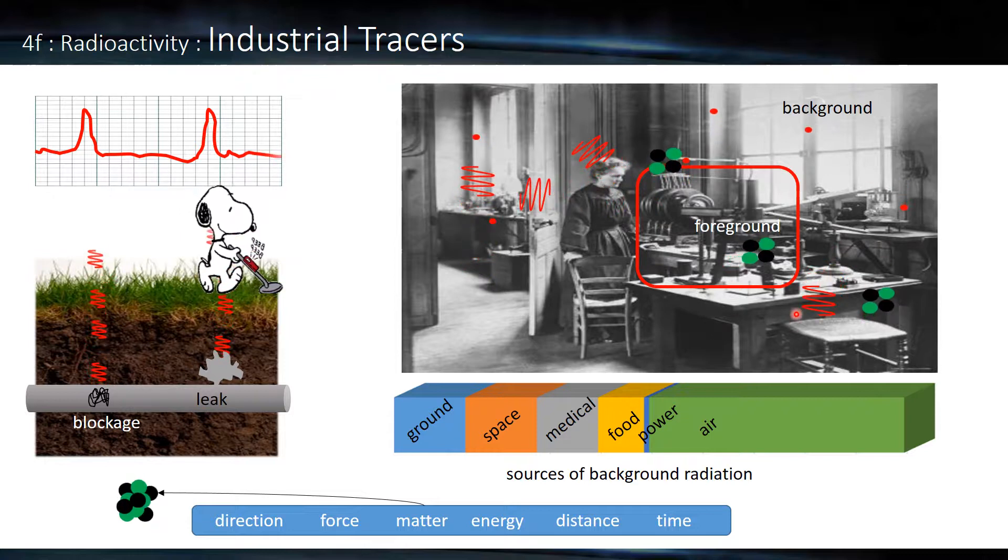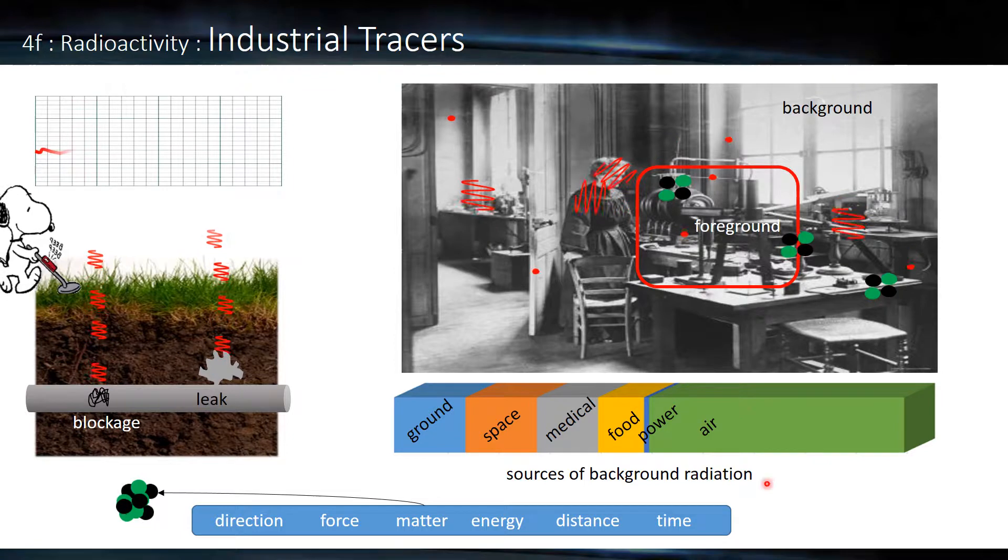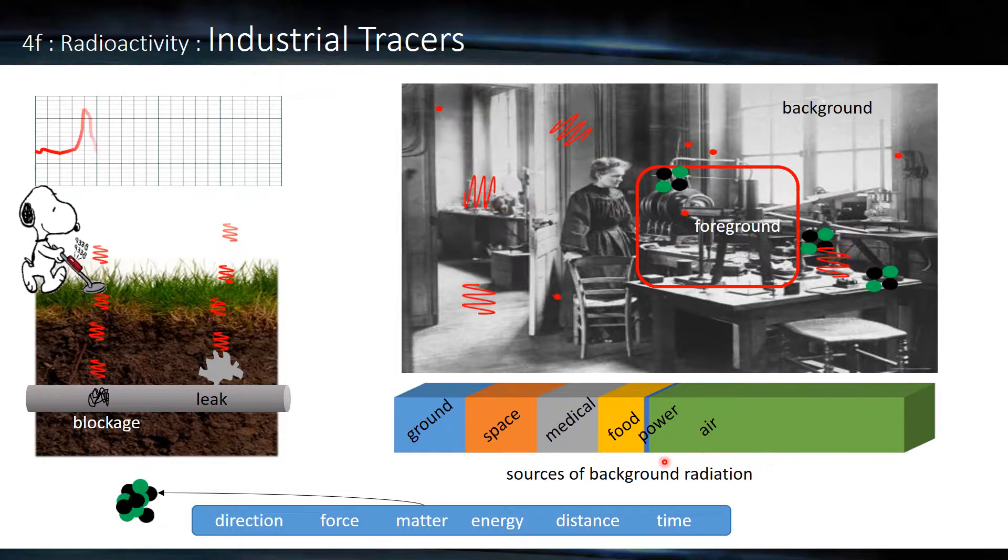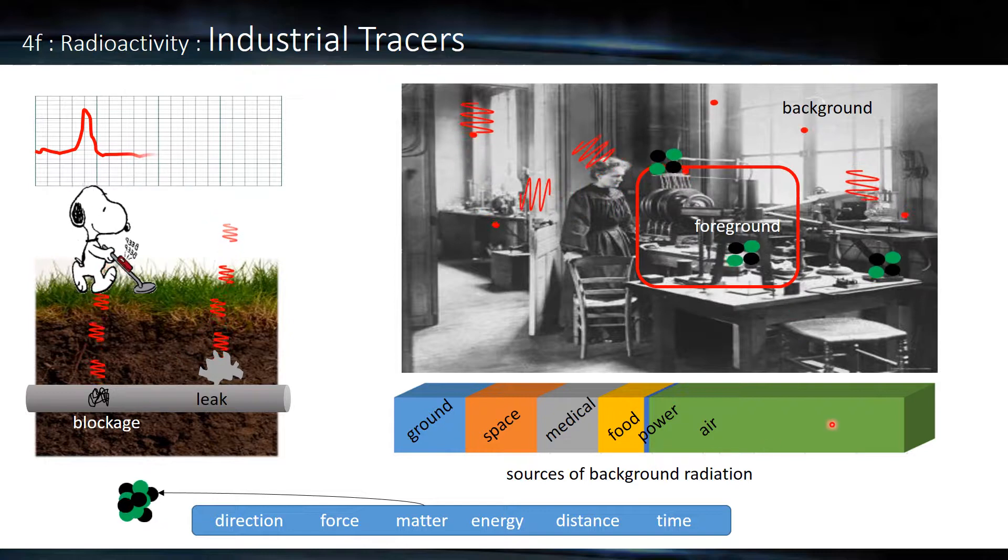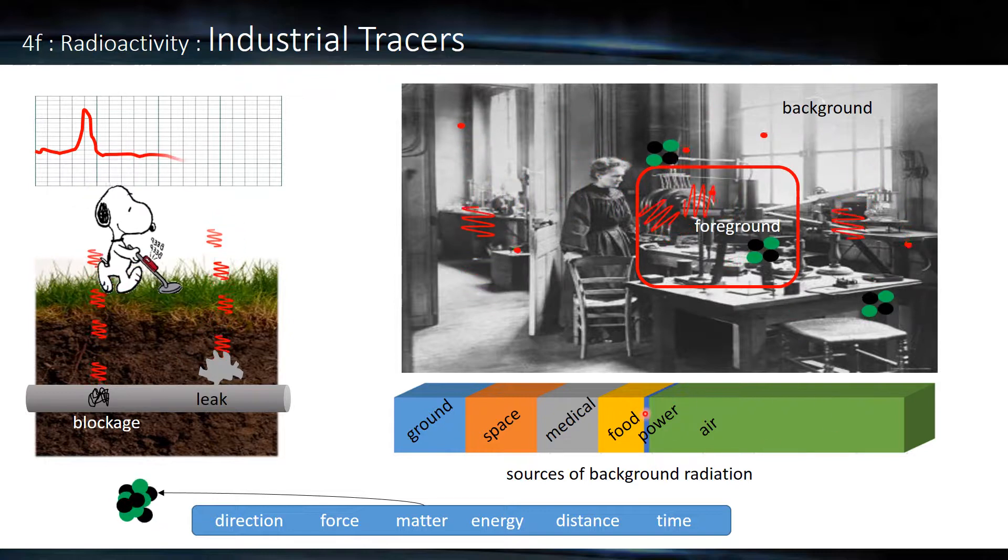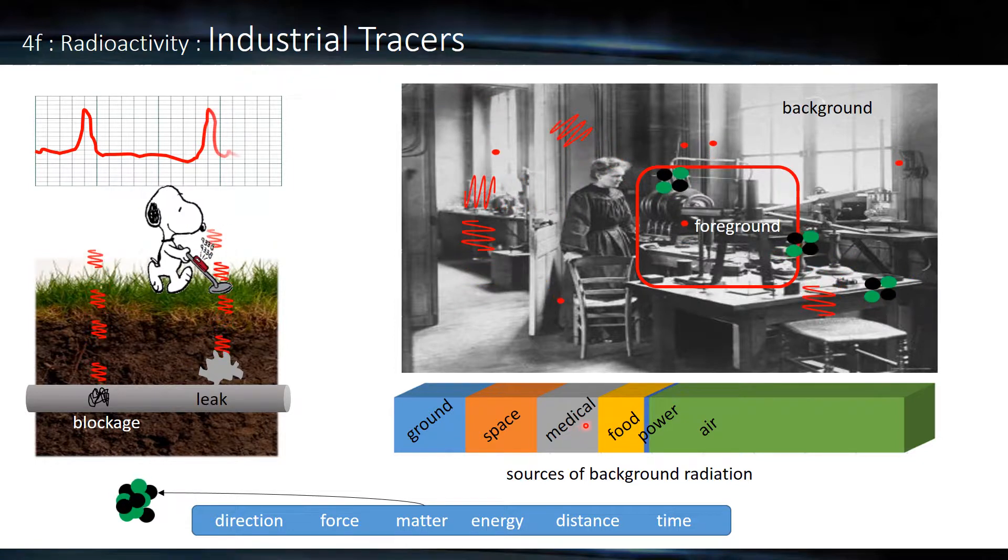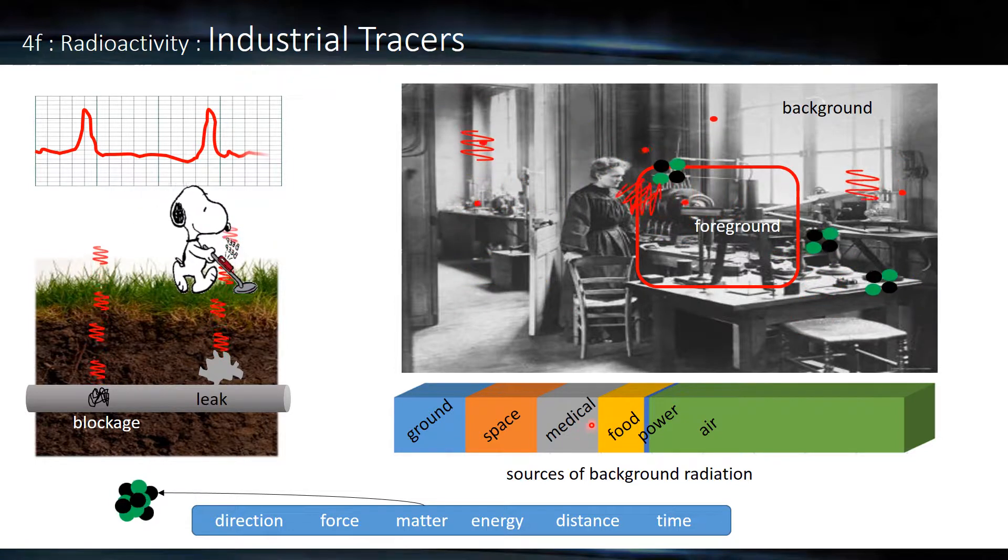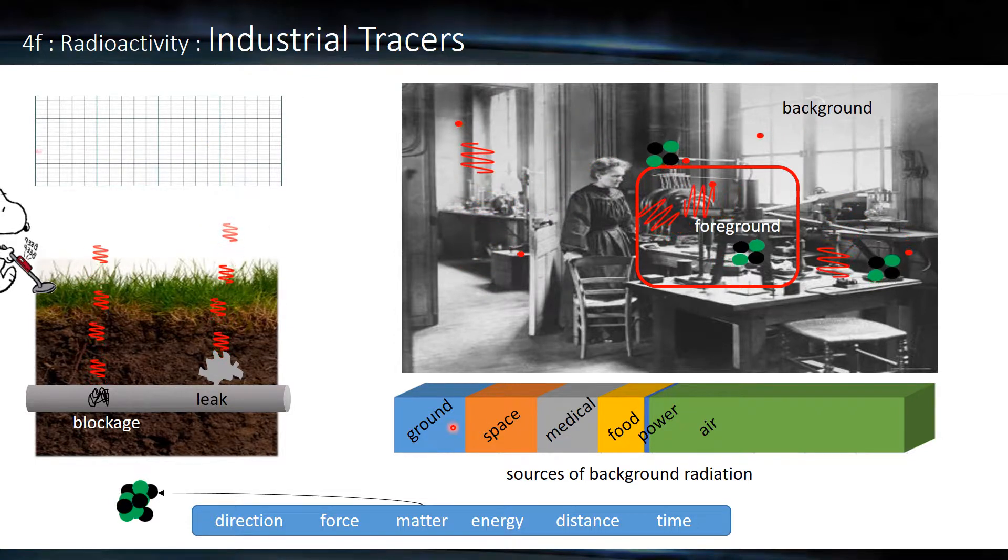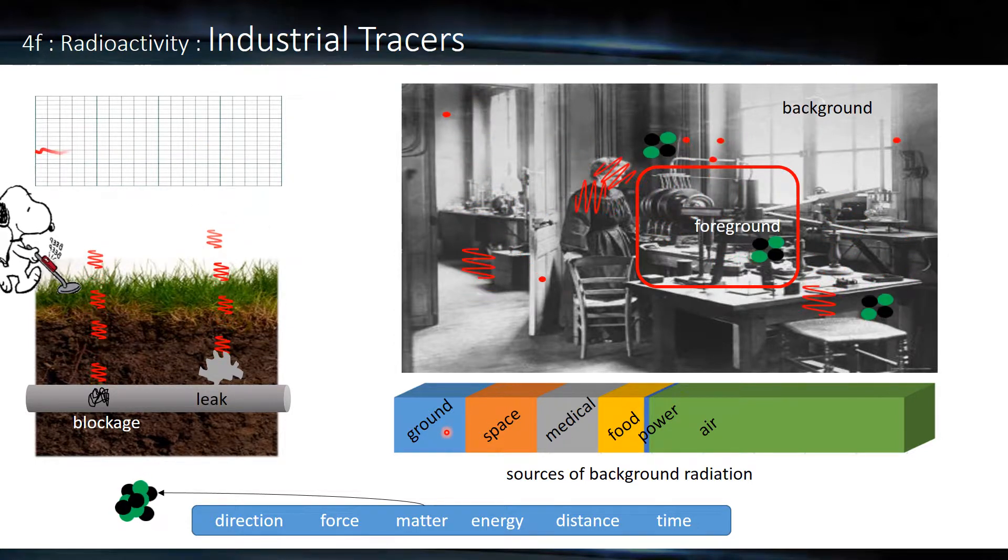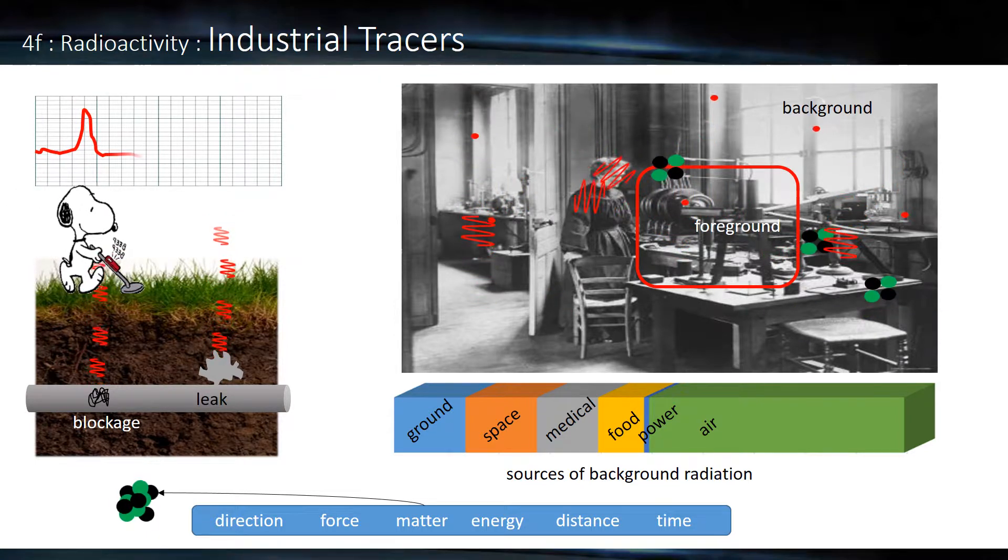And we need to subtract it from any foreground readings. Now, as we said, it's always present, but we can kind of distinguish where it comes from. You can see here the majority comes from air, small from nuclear power, food, medical treatments, diagnostic procedures, space, cosmic rays we mentioned, and the ground. It's particularly a problem where you have granite and we get radon gas coming out from the granite.